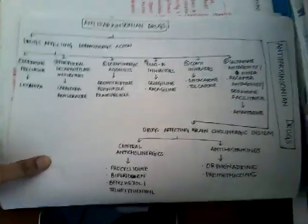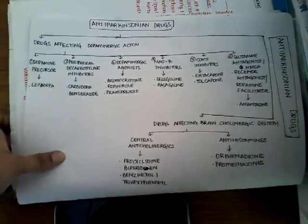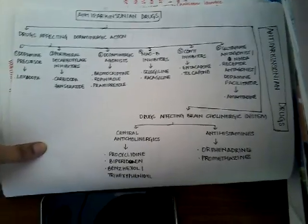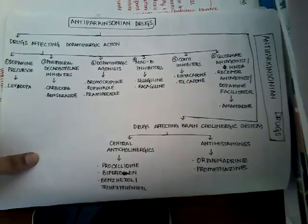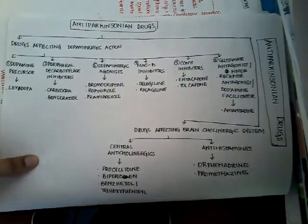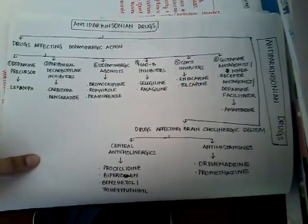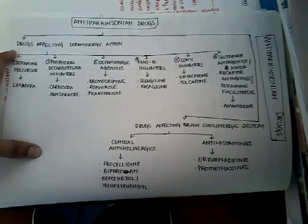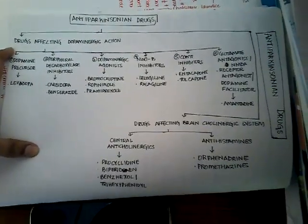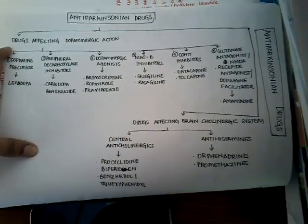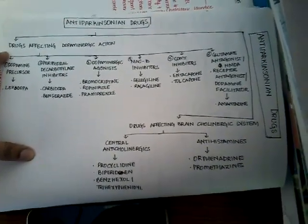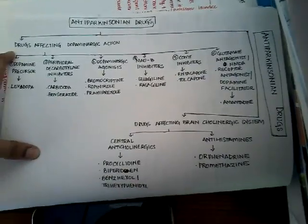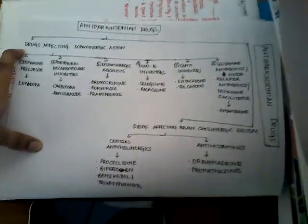Welcome to a new lecture on anti-parkinsonian drugs. Anti-parkinsonian drugs can be classified into two types: one includes drugs which affect the dopaminergic actions, and the other includes drugs which affect the brain cholinergic system.